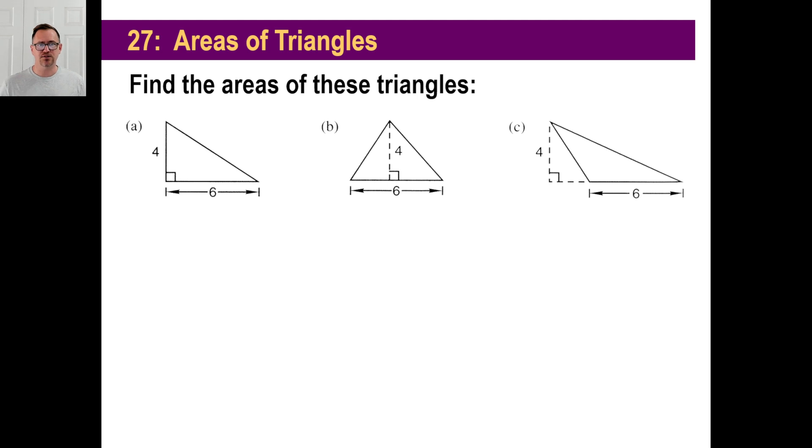Okay, well let's find the areas of these triangles. What's the area of a triangle? It's half the base times the height. So let's look at A first. Half the base times the height. Now you can do it any way you want. You can go 4 times 6. Of course the base is 6 and the height is 4. 24. And you can go half of 24 is 12. So you know the answer is 12.